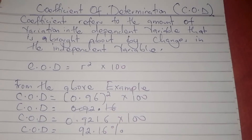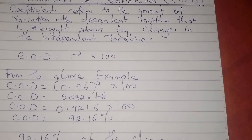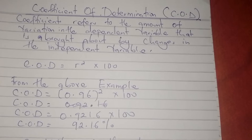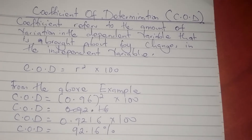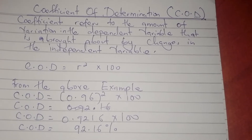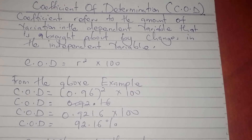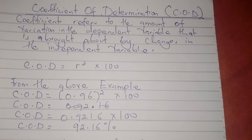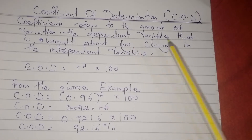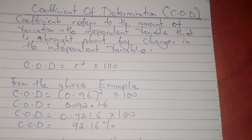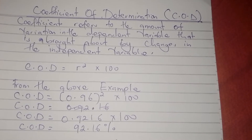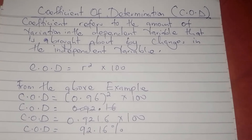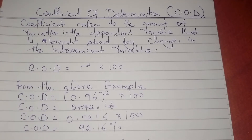However, if you do not attend class, it does not necessarily mean you will fail — you can read from home and still pass. There are also other factors that affect performance. You can attend class but if you don't study, you will not pass. So it looks at how much variation in the dependent variable is caused by changes in the independent variable.